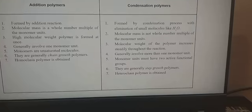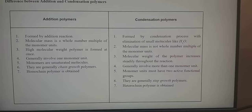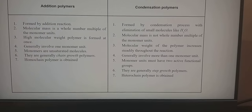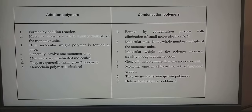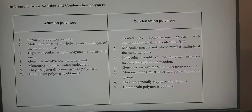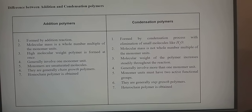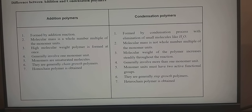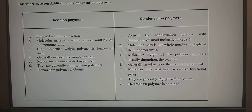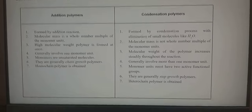Comparing addition and condensation polymers: addition polymers are formed by addition reaction, while condensation polymers are formed by condensation with elimination of a small molecule like water. Addition polymers have molecular mass that is a whole-number multiple of the monomer units; in condensation polymers, it is not a whole-number multiple. Addition polymers are high molecular weight polymers formed at once, whereas in condensation polymers the molecular weight increases steadily throughout the reaction. In addition polymers the monomers are unsaturated molecules; in condensation polymers, more than one type of monomeric unit is involved. Addition polymers are termed chain-growth polymers and homo-chain polymers; condensation polymers are termed step-growth polymers and hetero-chain polymers.